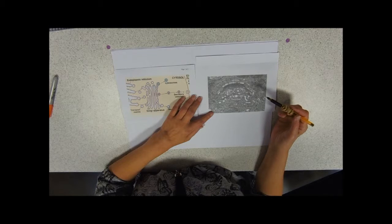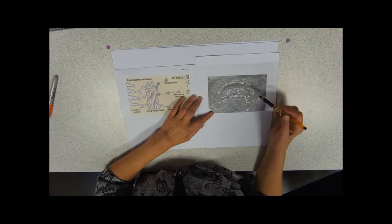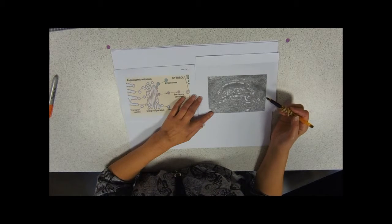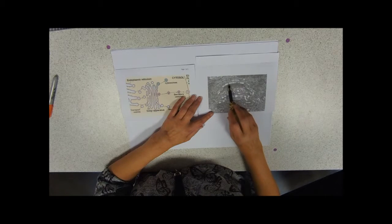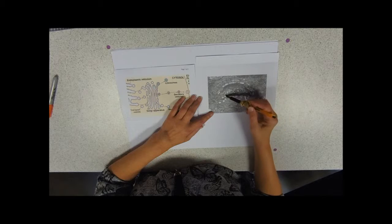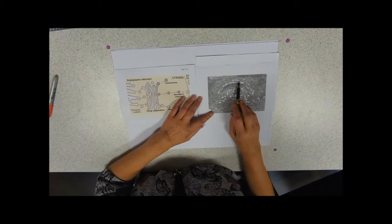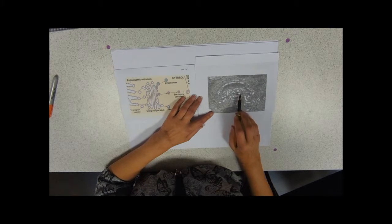These pale blobs are again membrane bound and they're vesicles. A vesicle is just a little sphere that encloses something inside of a cell.